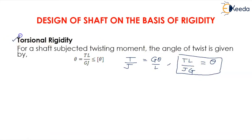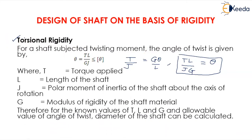This is according to torsional rigidity, where T is the torque applied, L is the length of the shaft, J is the polar moment of inertia of the shaft about the axis of rotation, and G is the modulus of rigidity of the shaft material.